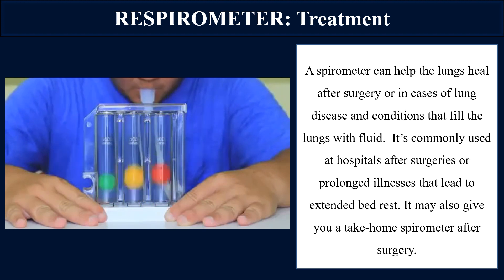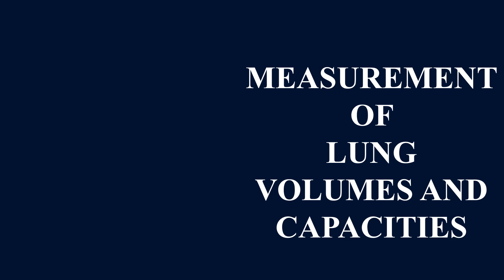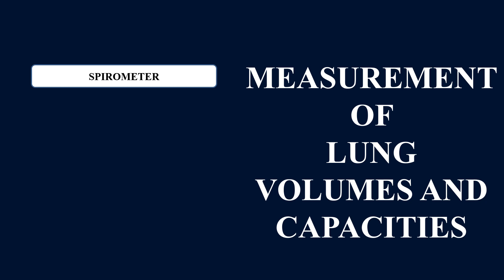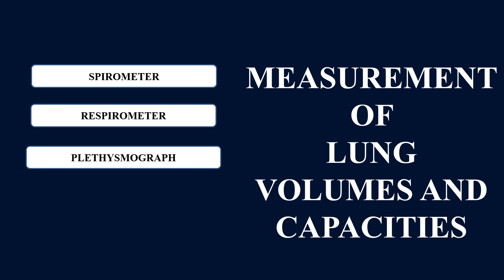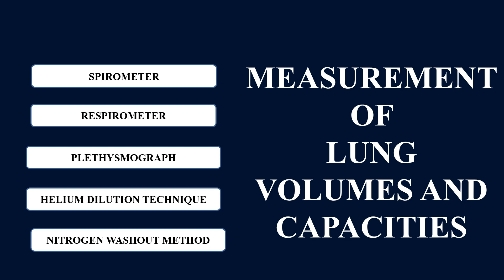There are a number of tests used to detect lung volumes and lung capacities. We have seen how the spirometer detects and interprets results, and the advanced form known as the incentive spirometer. However, both methods cannot measure residual volume. Other techniques include plethysmography, helium dilution technique, and nitrogen washout method.